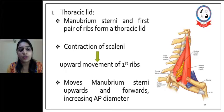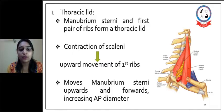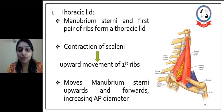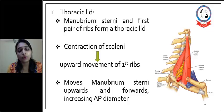First is the thoracic lead. The manubrium sterni and first pair of ribs form the thoracic lead. As the scalene muscles are inserted on the first rib, contraction of the scalene muscles causes upward movement of the first rib. Because of that, it moves the manubrium sterni upward and forward, thus increasing the AP diameter.